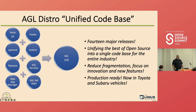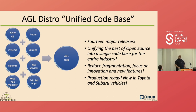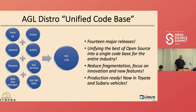AGL unified code base — that's what we call the distribution. We've had 14 major releases, and we'll be announcing some new fish names at this presentation, so you'll be the first to learn the new fish names coming up in 2023. Our goal is to unify the best of open source software into a single code base for the entire industry, reduce fragmentation, and focus on innovation. As Dan said in his keynote, we're production-ready — we're in Toyota, Subaru, and other vehicles.